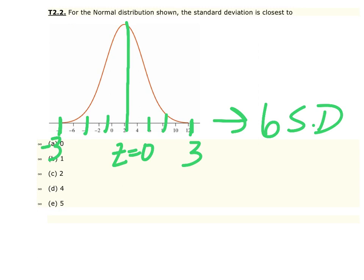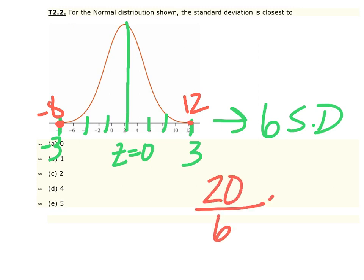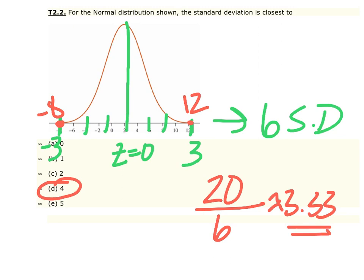So in total, there are six standard deviations in the full length of this number line. The number line goes from negative 8 to positive 12. The complete distance between that is 20 units. So if you take 20 and divide it into six standard deviations, you get approximately 3.3. Based on that, 3.3 is going to be closest to 4. And 4 makes better sense than exactly 3.3 because the tails can still extend a little bit beyond three standard deviations.